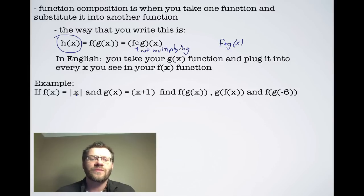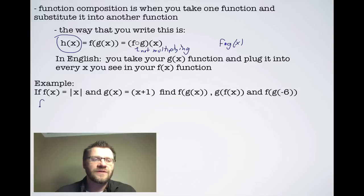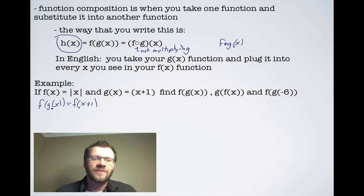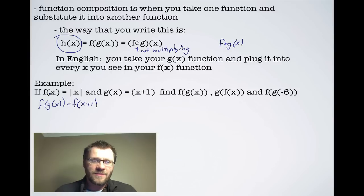For example, if f(x) = |x| and g(x) = x + 1, find f(g(x)), g(f(x)), and f(g(-6)). For f(g(x)), we find f(x + 1) by substituting g(x) = x + 1 into the f function, replacing every x with x + 1. So f(g(x)) = |x + 1|.